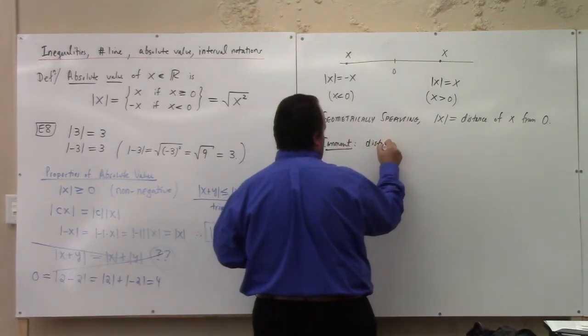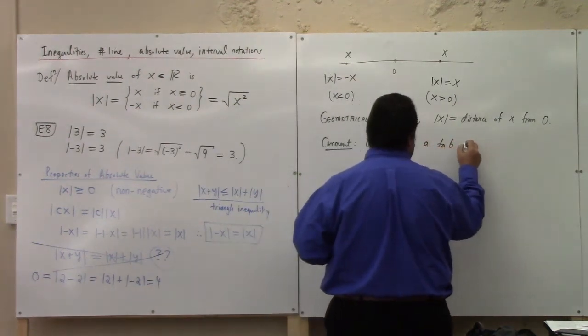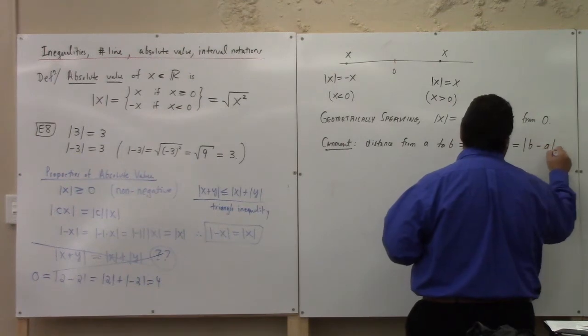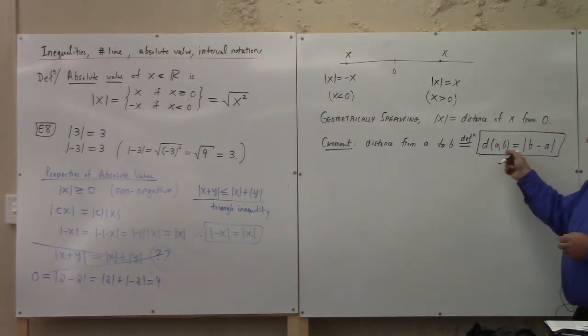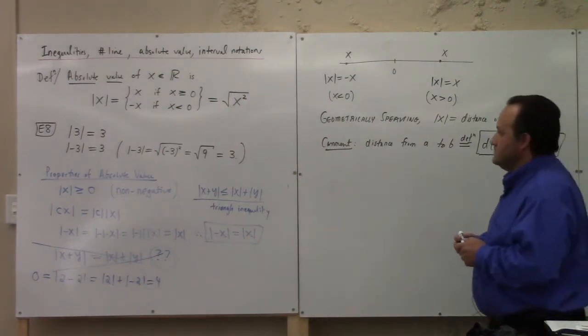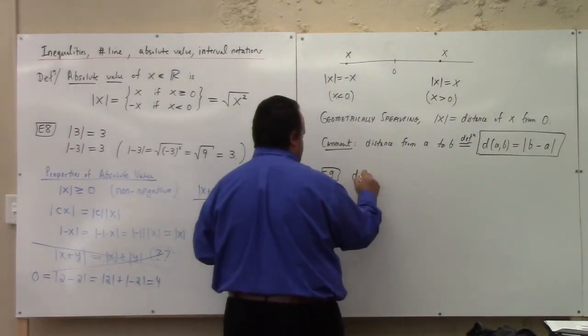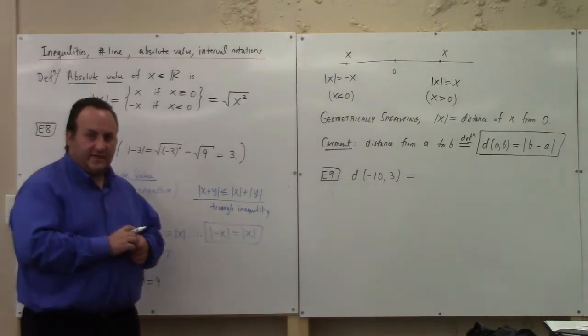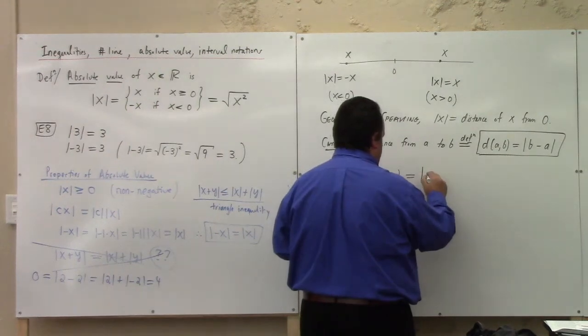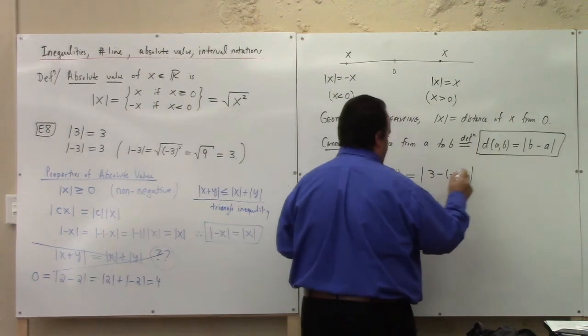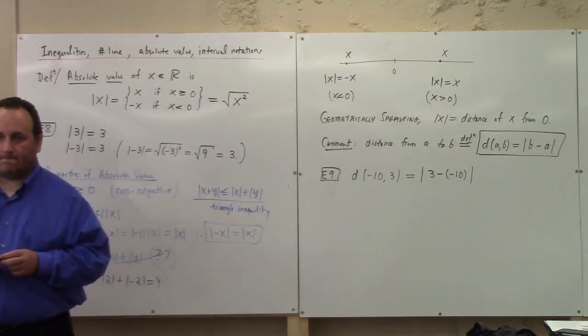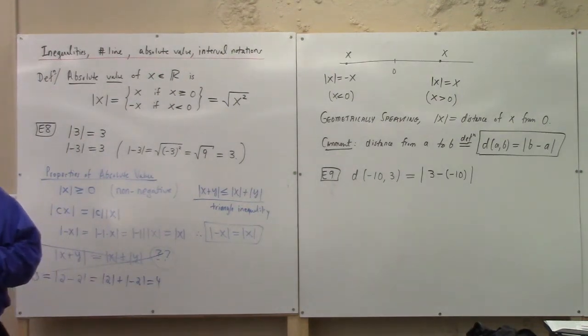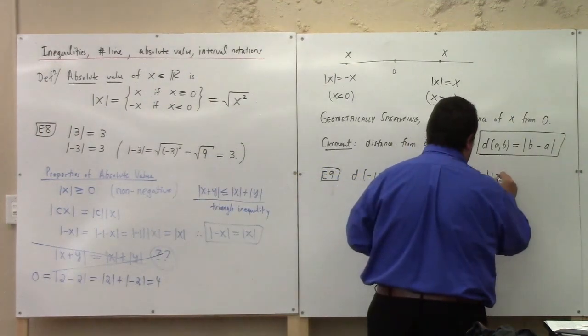The distance from a to b is defined to be equal to the absolute value of b minus a. So, this is distance from a to b. So, like, what's the distance from minus 10 to 3? We have to calculate the absolute value of the difference of those. So, we do absolute value of 3 minus minus 10. What's minus minus 10? 10, right? 10 plus 3, 13. So, the distance from minus 10 to 3 is 13.